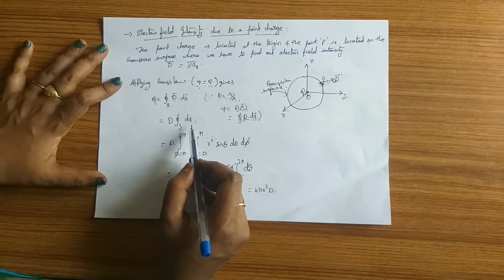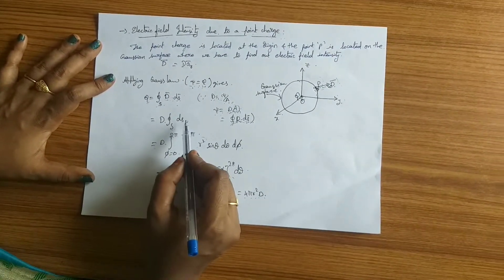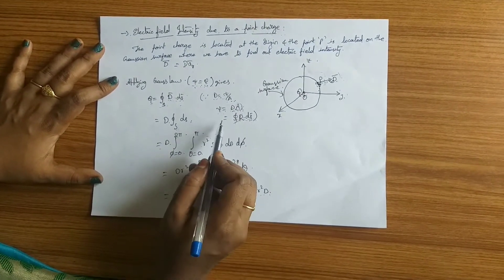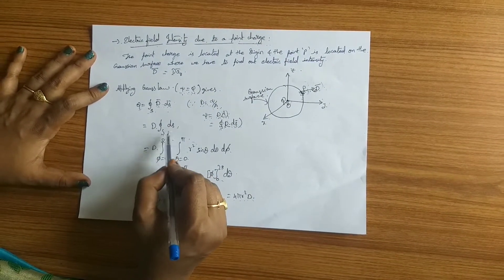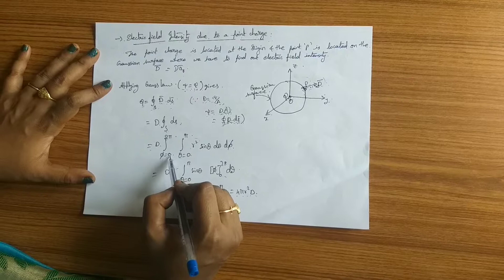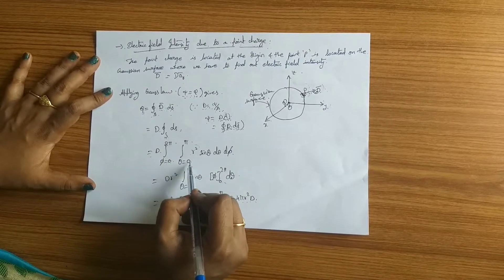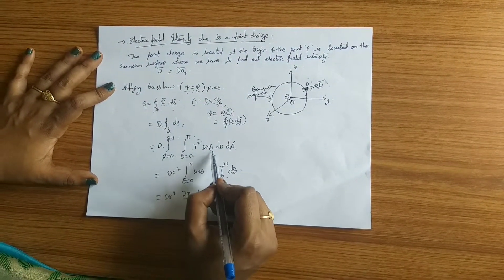In spherical coordinate system when the radius is constant and the remaining two components, theta and phi, are varying, the integral over s ds can be represented as integral phi equals zero to 2π and integral theta equals zero to π, r squared sine theta d theta d phi.